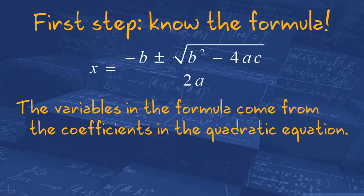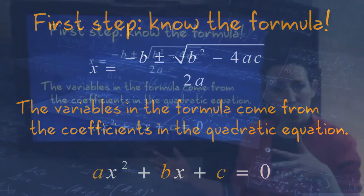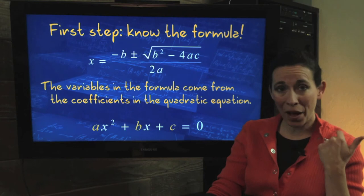Now, where do all of those little variables, the a, b's and c's, come from? So the variables in the formula come from the coefficients in the quadratic equation. So if you have the quadratic equation set equal to zero, and it's in proper format, descending powers, x squared, x, constant, all of the numbers here are your a, b, and c in alphabetical order. Pretty cool, huh?